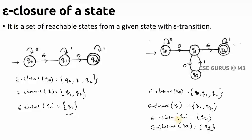To summarize: ε-closure of a state means all reachable states via epsilon transitions, and you must always include the state itself first. This concept is useful for converting an NFA with epsilon transitions to an NFA without epsilon transitions, which we will see in the next lecture. Thank you.